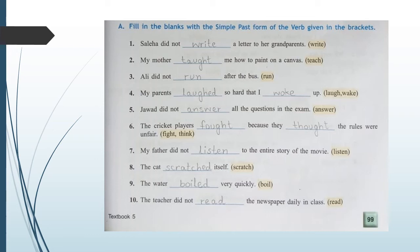Now come to Exercise A: fill in the blanks with the simple past form of the verb given in the brackets. As you can see, it is a negative sentence — there is 'did not' in the sentence. So you will not use 'wrote'; instead, you will use the first form, that is 'write'.